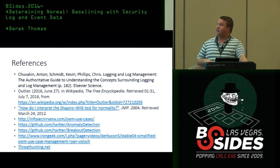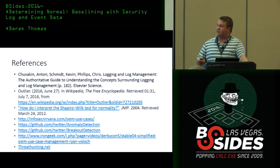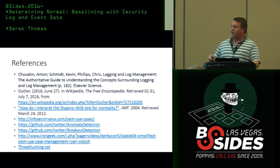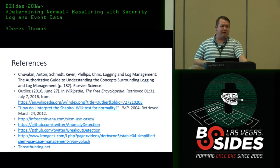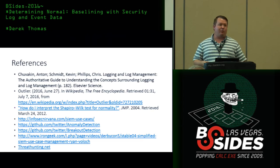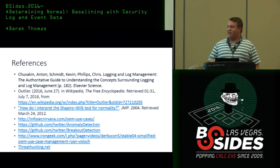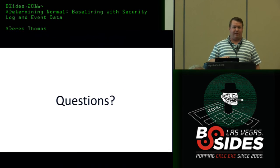Here are some references. I really like the Logging and Log Management book. If you're interested in the Shapiro-Wilks test, I definitely recommend InfoSec Nirvana for the SIM use case methodology — it's high level and straightforward. For anomaly detection and breakout detection, these are easy packages where you just feed in a list of quantities and they'll graph it for you. And ThreatHunting.net if you want additional use cases for evaluating outlier and baseline detection.